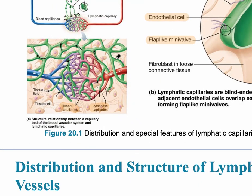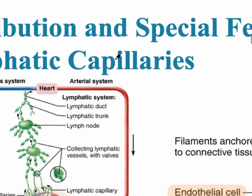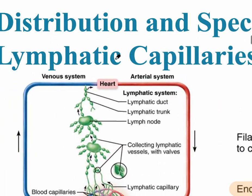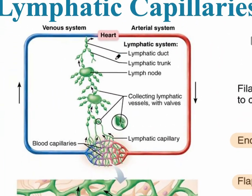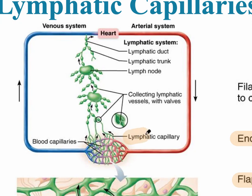Zooming back out and looking at the larger picture, we can see that the lymphatic capillaries lead into larger vessels called lymphatic vessels, which have valves — just like the veins — to ensure the fluid is going in one direction, back towards the heart.